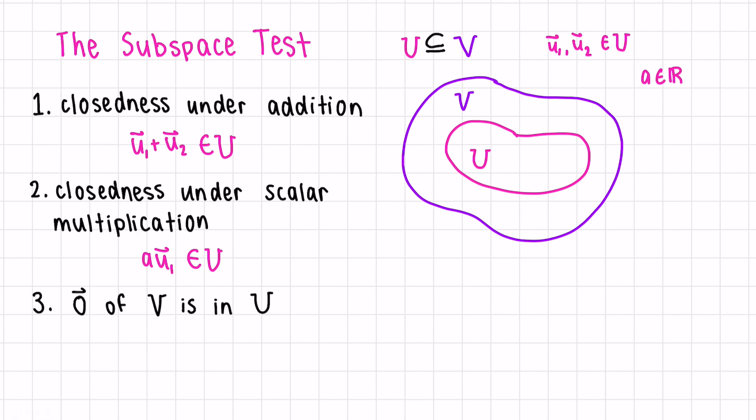The last condition is that the zero vector of V is contained in U. So we'll call this the zero vector. It's the same for both spaces.